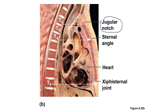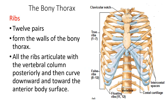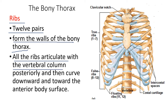Now let's go to the ribs. There are 12 pairs forming the walls of the bony thorax. All ribs articulate with the vertebral column — that is why there are 12 ribs and 12 thoracic vertebrae — one thoracic vertebra per pair of ribs.